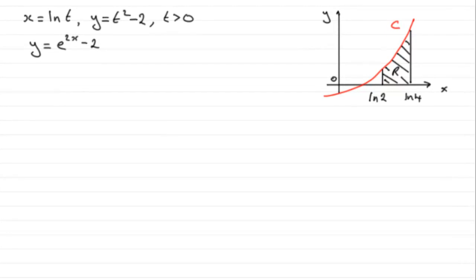Now for this next part we're told that this finite region R between x equals the natural log of 2 and x equals the natural log of 4, the x-axis and the curve C. This area is rotated through 360 degrees about the x-axis and we've got to use calculus to find the exact volume of the solid generated.